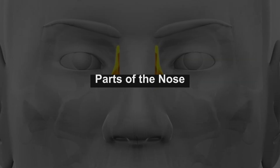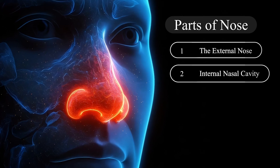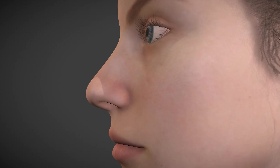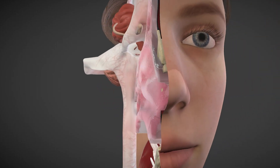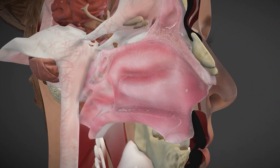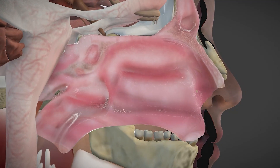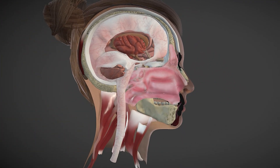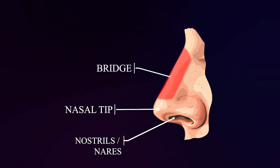The nose is generally divided into two main parts: the external nose and the internal nasal cavity. The external nose is the part visible on the face, while the internal nasal cavity is located inside the skull. The internal structure is much larger than it appears from the outside and connects to the sinuses, throat, and even the ears. The external nose includes the nostrils, also called nares, the nasal tip, and the bridge.